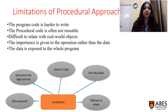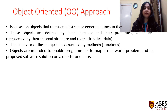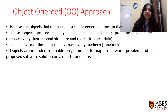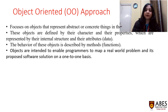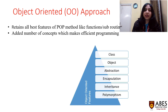These are the limitations of the procedure-oriented approach. The second approach of system design is the object-oriented approach. As the name suggests, it focuses on objects, which are real-world entities. The behavior of objects is described by functions, so this approach consists of objects, their attributes, and their functions. Attributes refer to data structures and behavior refers to functions. Objects enable programmers to map a real-world problem and its software solution on a one-to-one basis.